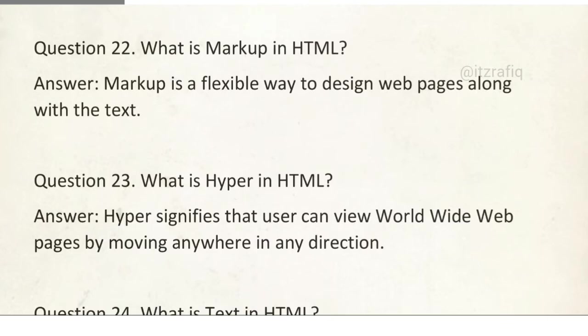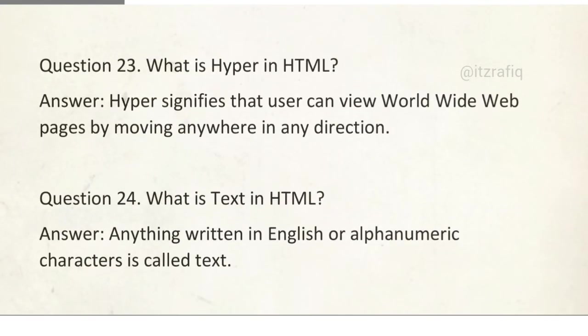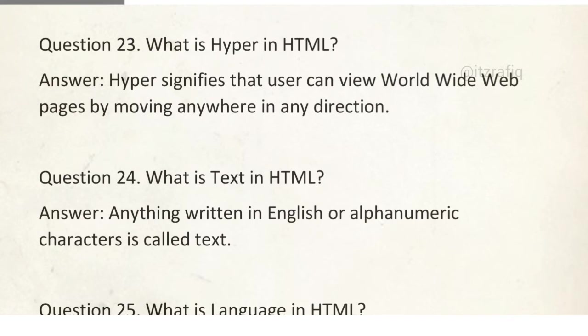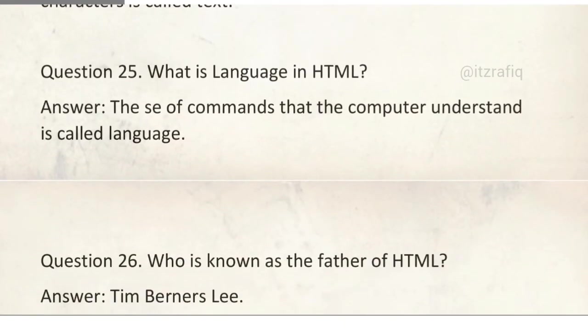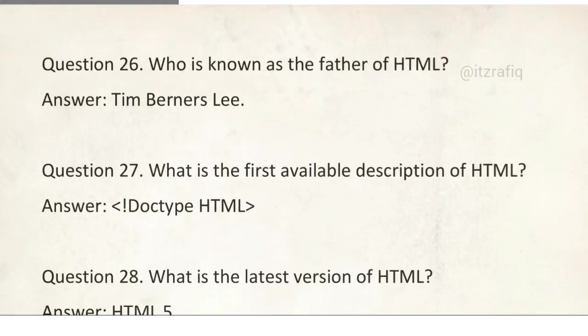Number 22: What is markup language? Markup languages are mainly used to present the information or content to our web browser, to the internet or WWW. We can write: markup is a flexible way to design web pages along with text. Why is hyper, or what is hyper in HTML? Hyper signifies that users can view worldwide web pages by moving anywhere in any location. What is text in HTML? Anything written in English or alphanumeric characters is called text. What is language? A set of commands, T is missing here, a set of commands that a computer understands is called language. Number 26: Who is the father of HTML? Tim Berners-Lee.